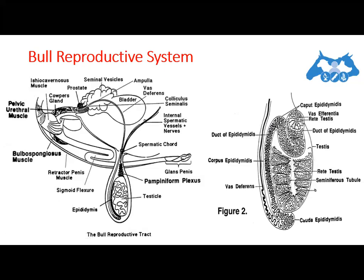After the tail of the epididymis comes the vas deferens, also known as the ductus deferens. This is a slender tube connecting the epididymis with the urethra, which enlarges into an ampulla just before joining the urethra. The surgical cutting of this structure is known as vasectomy.